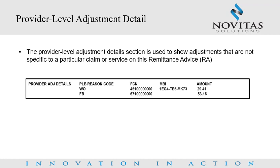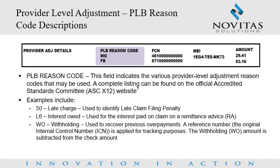Provider level adjustment detail. The provider level adjustment detail section is used to show adjustments that are not specific to a particular claim or service on this remittance advice. PLB reason code — this field indicates the various provider level adjustment reason codes that may be used. A complete listing can be found on the Accredited Standards Committee, ASC, X12 website.